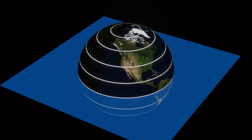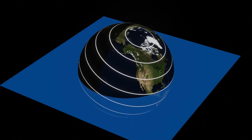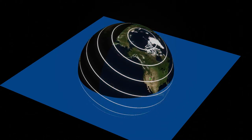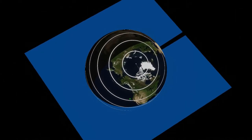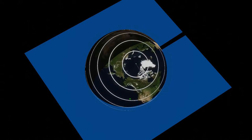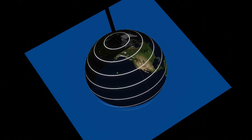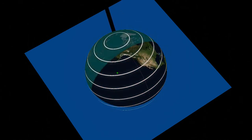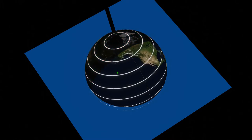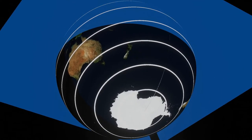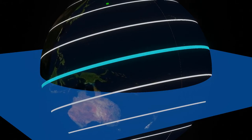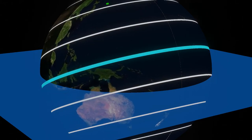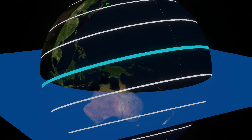If the declination angle is positive, the length of the day in the northern hemisphere is longer than the length of the night — we all see this happen during summer. During winter, the declination angle is negative and the length of the day is shorter than the length of the night. The opposite is true in the southern hemisphere. People at the equator always have the length of the day equal to the length of the night, regardless of the season.